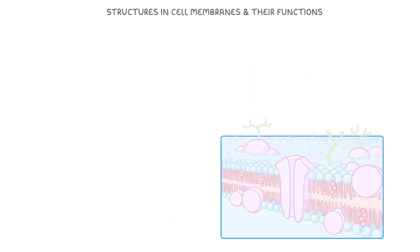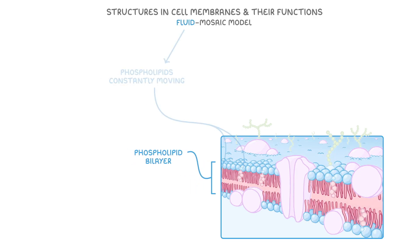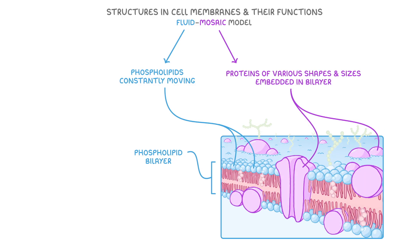To understand the structures in cell membranes and their functions, we first need to talk about the fluid mosaic model, which is just a way to describe the arrangement of molecules within the membrane. This model represents two main features of all cell membranes. Firstly, it's fluid, because in the phospholipid bilayer the phospholipids are constantly moving, giving the membrane flexibility. And the mosaic part is because there are proteins of various shapes and sizes embedded in the bilayer, like a mosaic pattern made up of lots of different tiles.